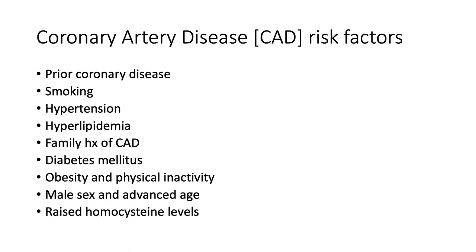It's very important to tease out if the patient has any coronary artery disease risk factors — there's a whole truckload of them. Did the patient have a previous myocardial infarct or coronary artery disease before? Angina — stable, unstable, etc. Smoking: quantify how many years the patient has been smoking and calculate pack year history, which is the number of cigarettes smoked per day divided by 20, multiplied by the number of years smoking. Does the patient have hypertension, hyperlipidemia, family history of coronary artery disease, diabetes mellitus, obesity, physical inactivity, male sex, advanced age, and the new one — raised homocysteine levels.